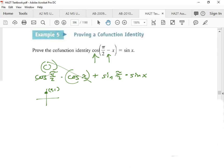What is sine of π/2? One. Now, okay, what is 1 times sine x? Sine x. So we did it. We just proved that that side equals that side.